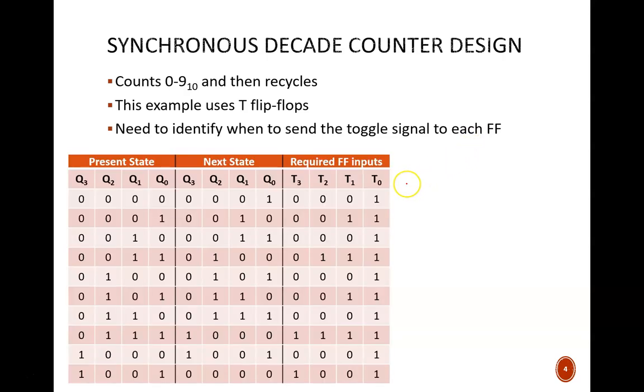The next state table for the design looks like this. The present state section shows 4 bits, which count from decimal 0 through 9. The next state section shows each of those numbers increased by 1. Take special note of the recycling at the bottom row. Here we see decimal 9 must become 0. The flip-flop input section shows what the t instructions must be to enact the necessary changes.